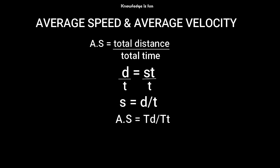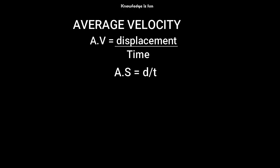Now let's look at average velocity. Average velocity equals displacement over time — that is, v equals d over t, where d stands for displacement. The formula looks the same but they have different meanings.